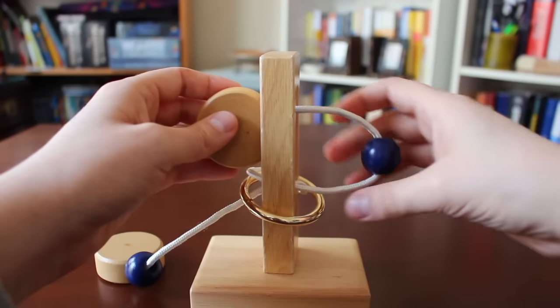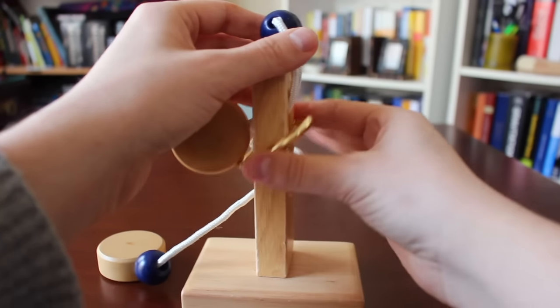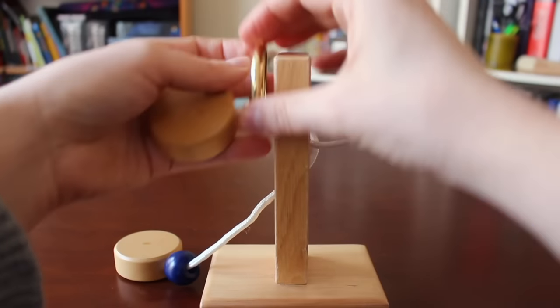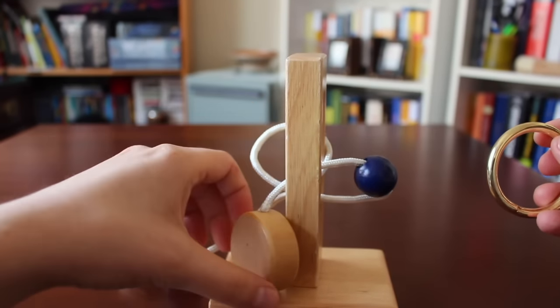Putting the end through the puzzle, bringing the blue bead up to the top, and bringing the ring over allows us to bring it back through and off of the puzzle.